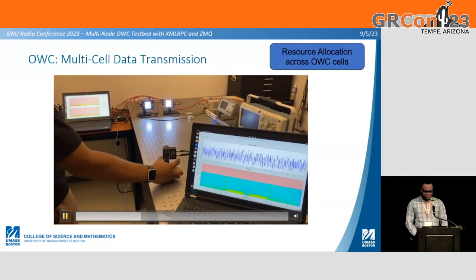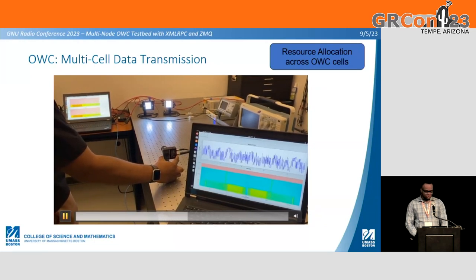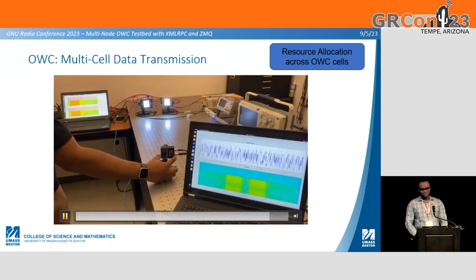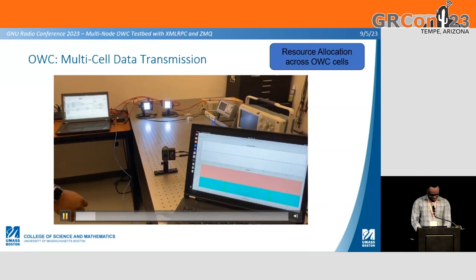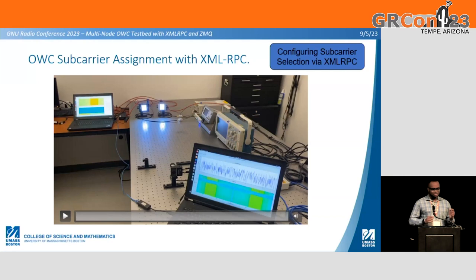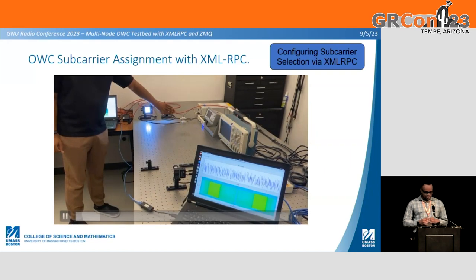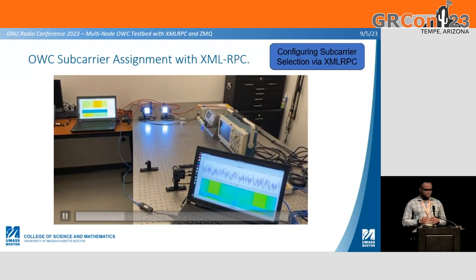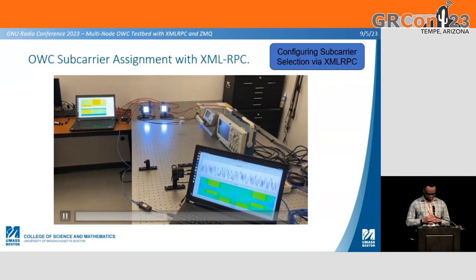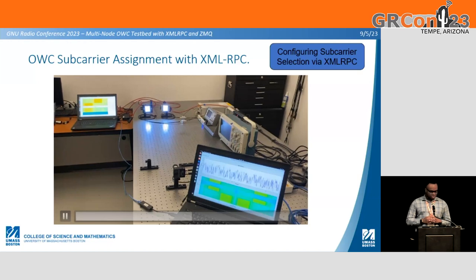As you can see, we rotate the photo sensor, and as we rotate we observe the change in the audio output. We also show a demo where we use XMLRPC from a central computer to configure the OWC subcarrier assignment — all done remotely from a third control computer using XMLRPC without using any Qt GUI. We simply run our control script in Python, and you can observe the changes in the waterfall plot as the different subcarriers are changing.